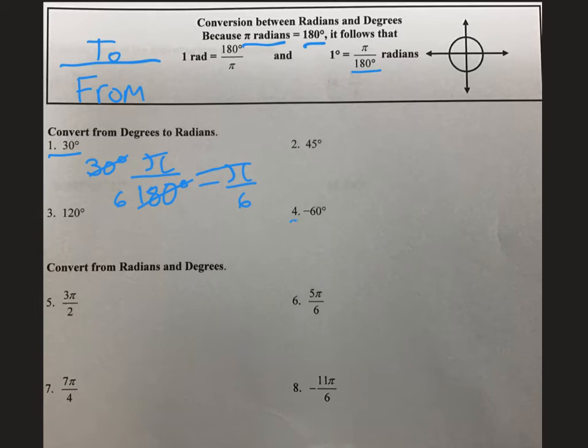Next up, we are going to look at number four. We have negative 60 degrees. And to get to radians, we divide by 180 degrees and multiply by π radians. 60 goes into 180 three times. So we are left with negative π divided by three.